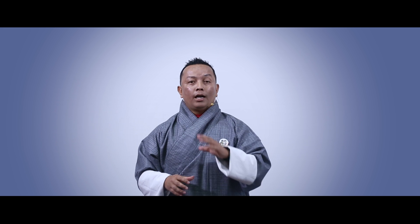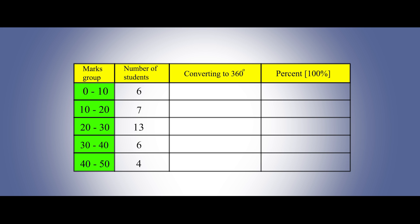How are you going to represent this data into a circle graph? There are two ways you can represent collected data into a circle graph. Firstly, we can represent them as a percentage in a circle, and secondly, we can represent that data as a degree measurement. We are going to convert it into degrees first, then into percentage. For 0 to 10, there are 6 students out of 36, so 6 divided by 36 times 360 will be 60 degrees. In the same manner, 7 divided by 36 times 360 will be 70 degrees. 13 students will be 130 degrees, 6 students will be 60 degrees again, and 4 students will be 40 degrees.